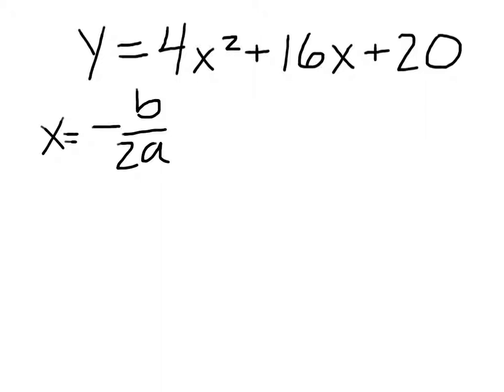Okay, and then once we find X using that, all we do is plug in X here and here — the value that we get — and that gives us the Y. And then that's our vertex, X comma Y. So what do we have here? We need the B and the A. We don't even really need the C. So here's A — that's 4. And here's our B, which is 16.